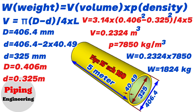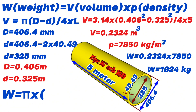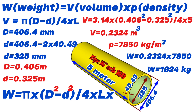Summarizing what we learned in this video, we can use this combined formula to find the weight of a pipe: Weight equals π multiplied by (outside diameter squared minus inside diameter squared) divided by 4, multiplied by the length of the pipe, multiplied by the density of the pipe material. By using this method, you can easily calculate the weight of pipe pieces from any pipe drawing.